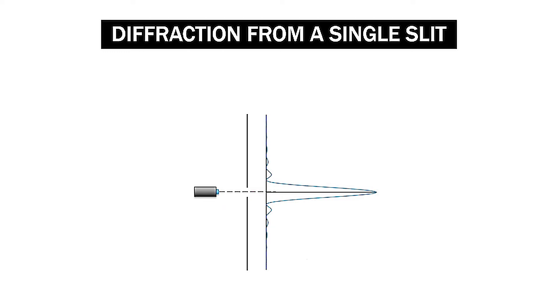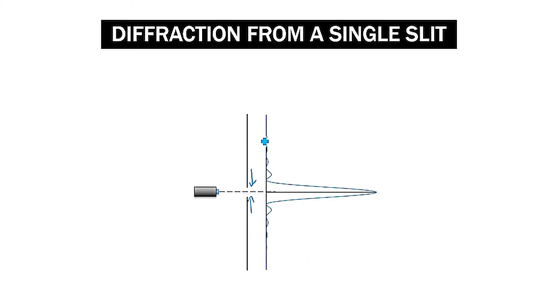Let's say that I make the slit width narrower — I decrease the slit width. The effect that this has is it reduces our uncertainty in position. When the photons travel through the slit, they could be anywhere in this range. So when we decrease the slit width, we're decreasing the uncertainty in the photon's position.